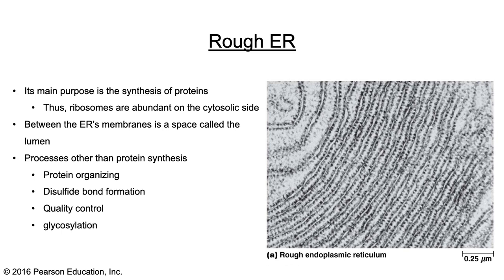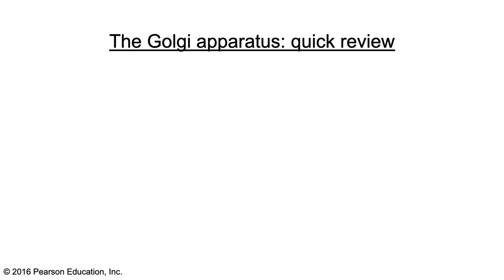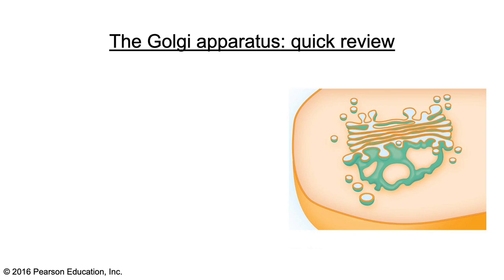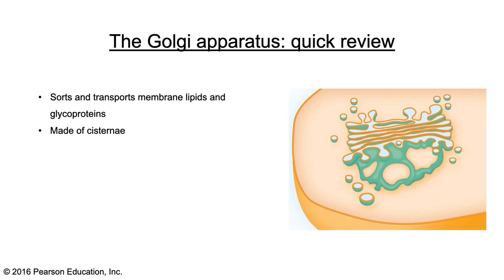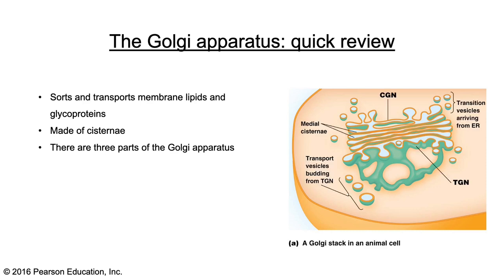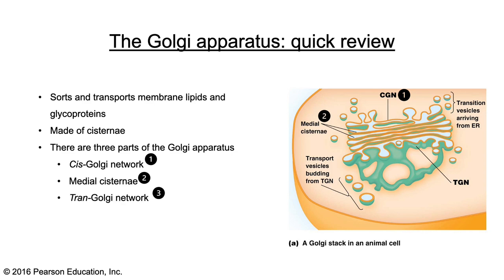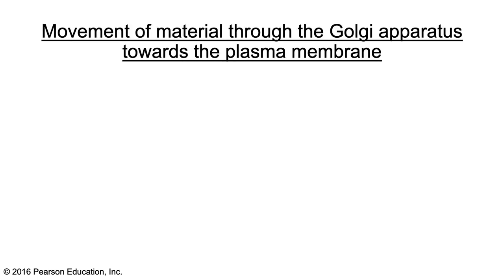Glycosylation also occurs in the ER, which is the first step in that glycosylation process. Now the Golgi apparatus — it sources and transports membrane lipids and glycoproteins, and like the ER, is made of cisternae, those membrane-bound sacs. There are three parts of the Golgi apparatus to keep in mind: the cis-Golgi network, which is the side closest to the ER; the medial cisternae in the center; and the trans-Golgi network, which is the side closest to the plasma membrane.